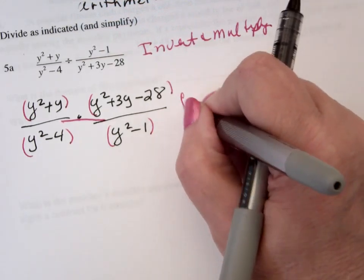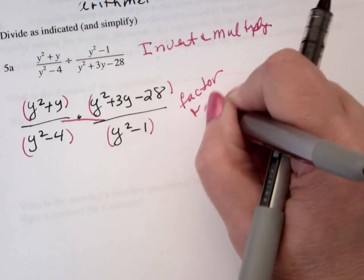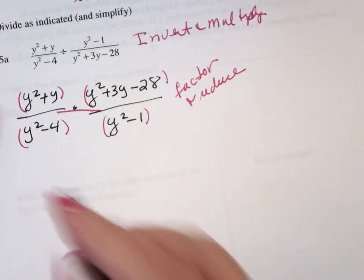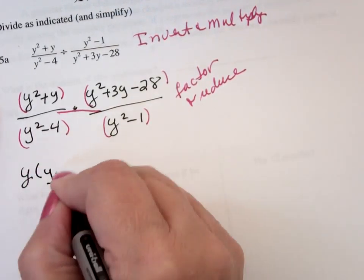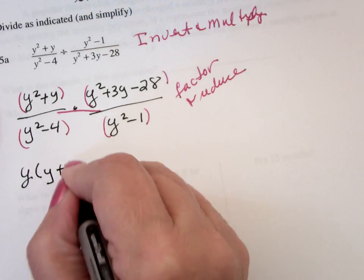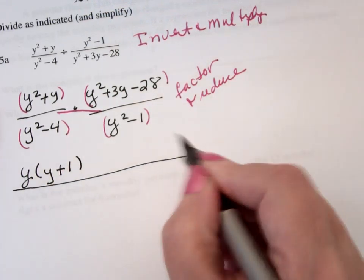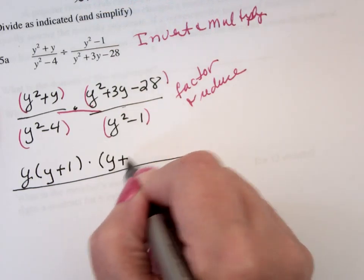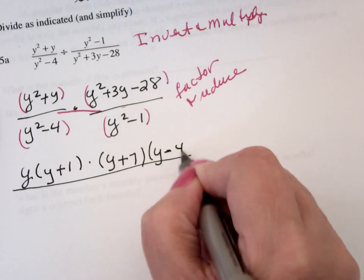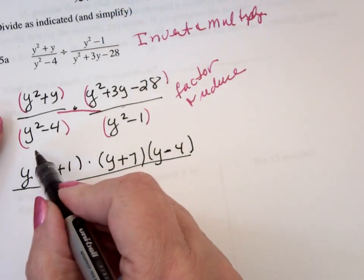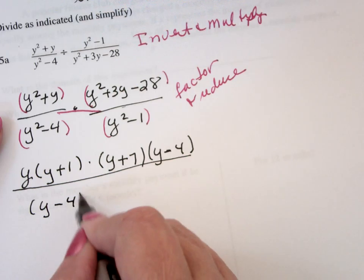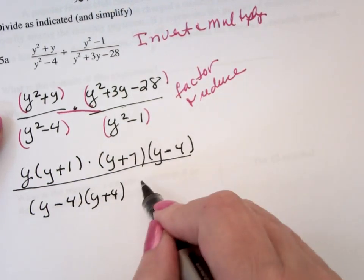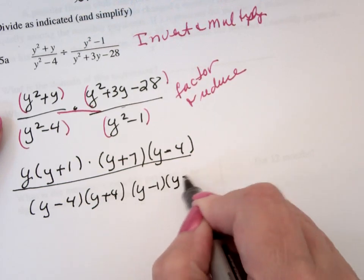And now we're going to factor and reduce, so this becomes a y times y plus 1, greatest common factor. And then the second grouping is y plus 7y minus 4. Difference of squares, y minus 4y plus 4. Difference of squares, y squared minus 1 is y minus 1y plus 1.